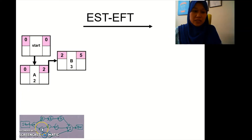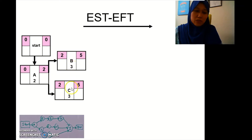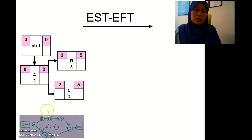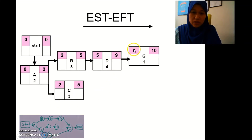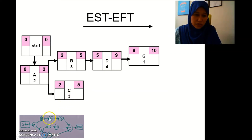After A we have B and C. Two plus three is five for both. Then B goes to D — we bring five here, and five plus four is nine. After D we have G, so we bring nine here: nine plus one is ten. We're done with the first row.